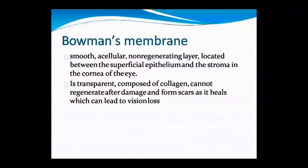The second structure is Bowman's membrane. It is a smooth, acellular, non-regenerating layer located between the superficial epithelium and the stroma. It is transparent and made of collagen. If damaged, it cannot regenerate — it will become scar tissue, which can lead to vision loss because scar tissue is dead tissue that is opaque.